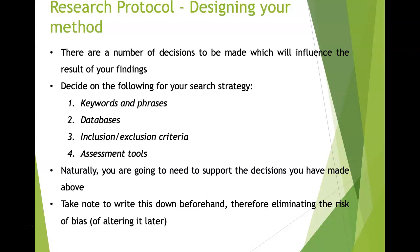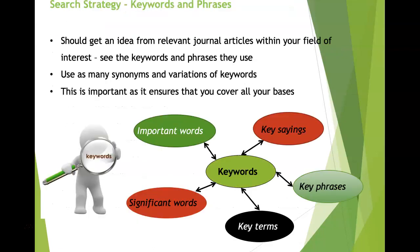Decide on the following for your search strategy: the keywords and phrases, the databases you're going to search, what your inclusion and exclusion criteria are, and what assessment tools you're going to use to assess the quality of the journal articles selected. You need to support your decisions with evidence, and make sure you follow your protocol stringently, eliminating the risk of bias from altering it later.